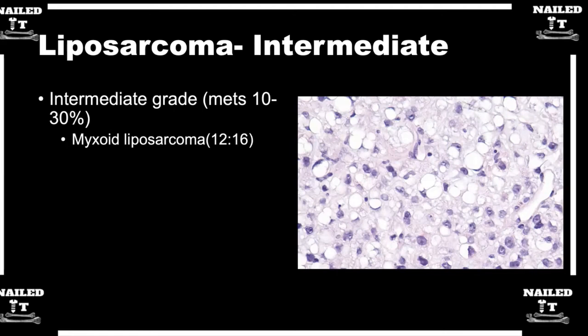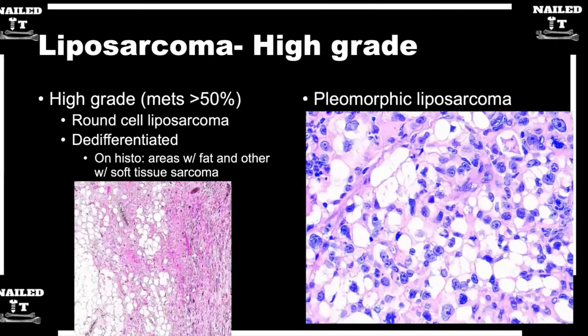There's always the translocation between chromosomes 12 and 16 associated with myxoid liposarcoma — that's an easily testable point. And then our pleomorphic versus dedifferentiated liposarcomas — these are our high-grade liposarcomas with a high chance of metastasis.